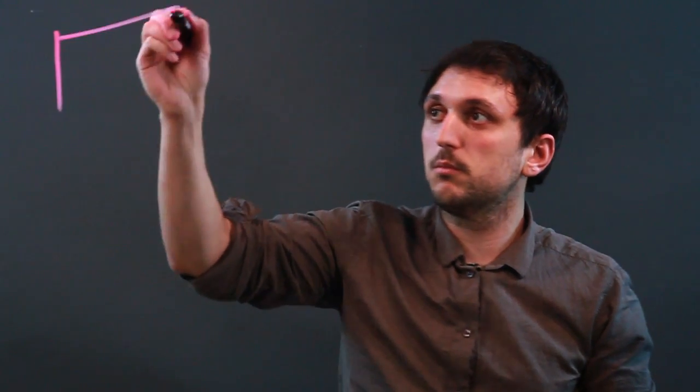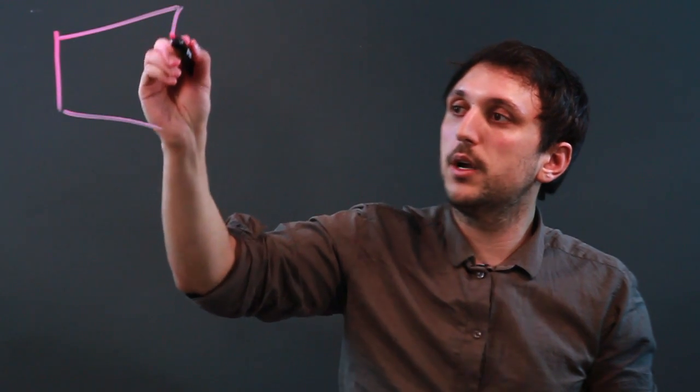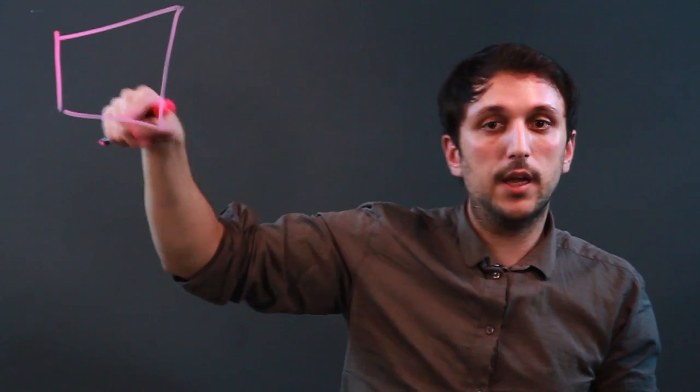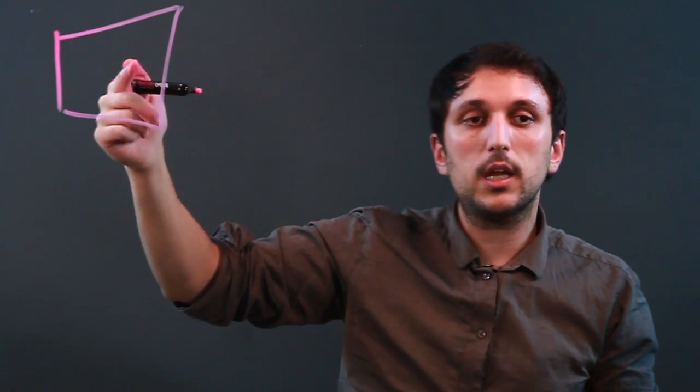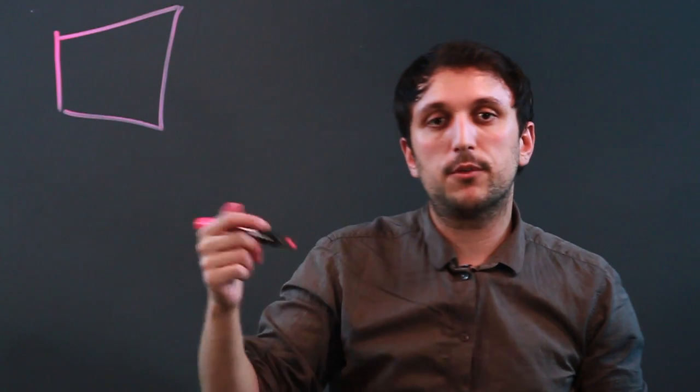Now, a quadrilateral is a four-sided polygon, meaning a four-sided closed shape. The most basic one would be something like this, where none of the lines are parallel and none of the angles are really equal, but we have special types of quadrilaterals.